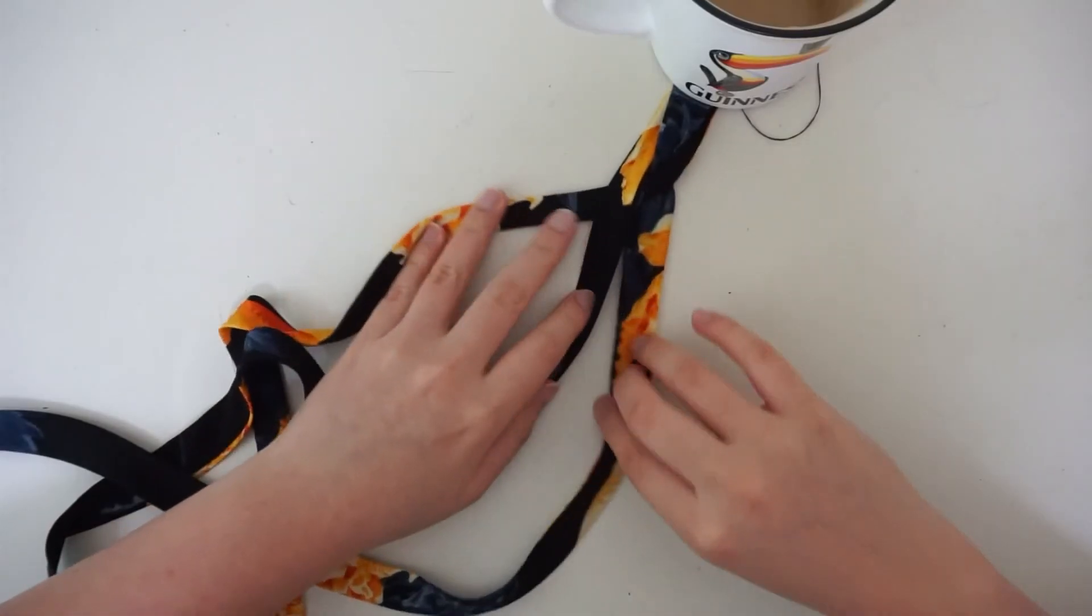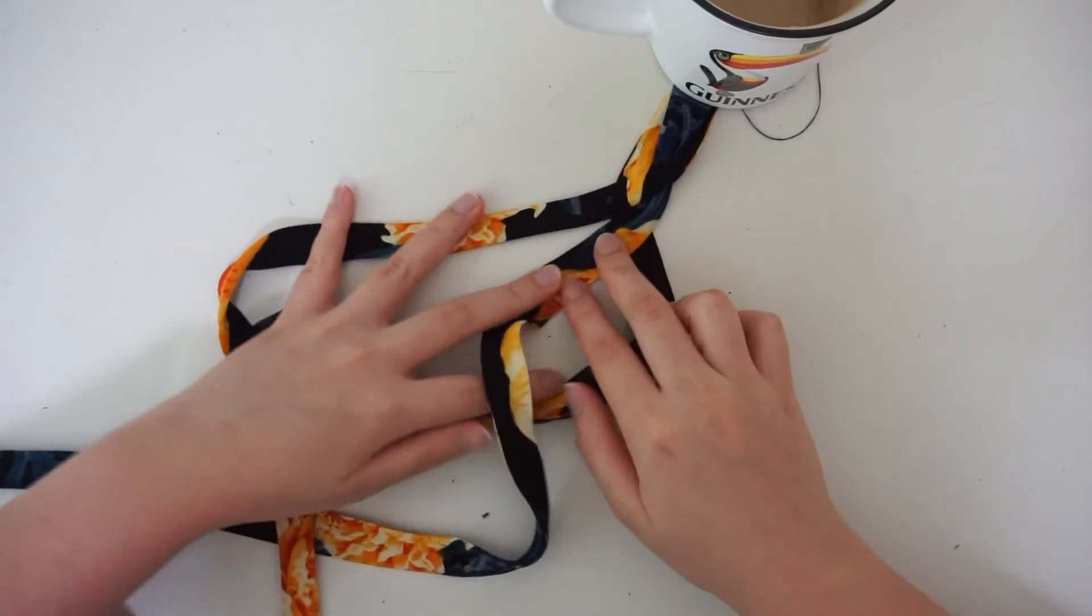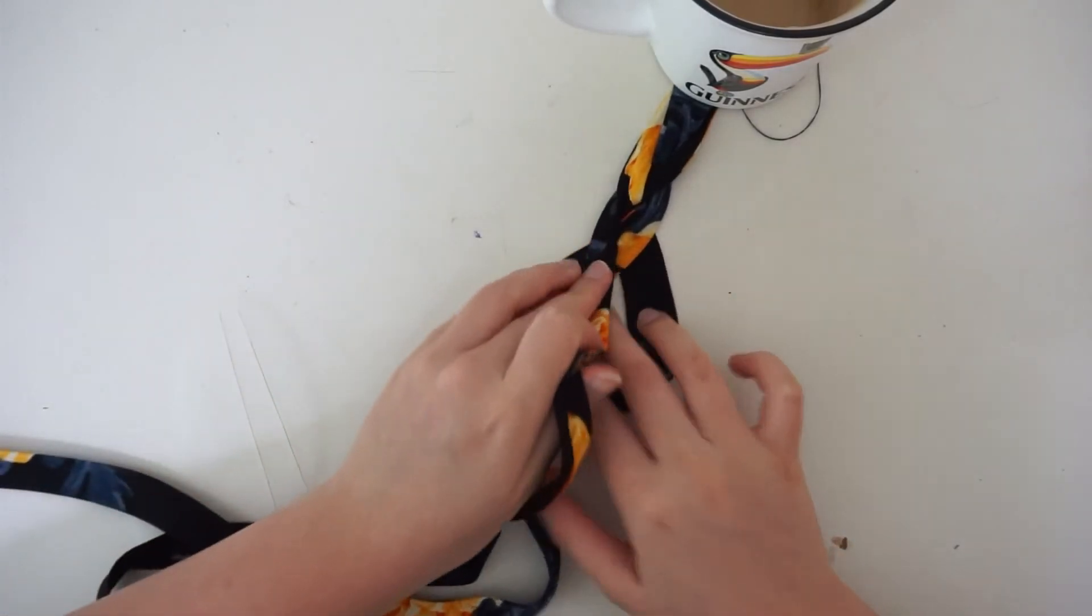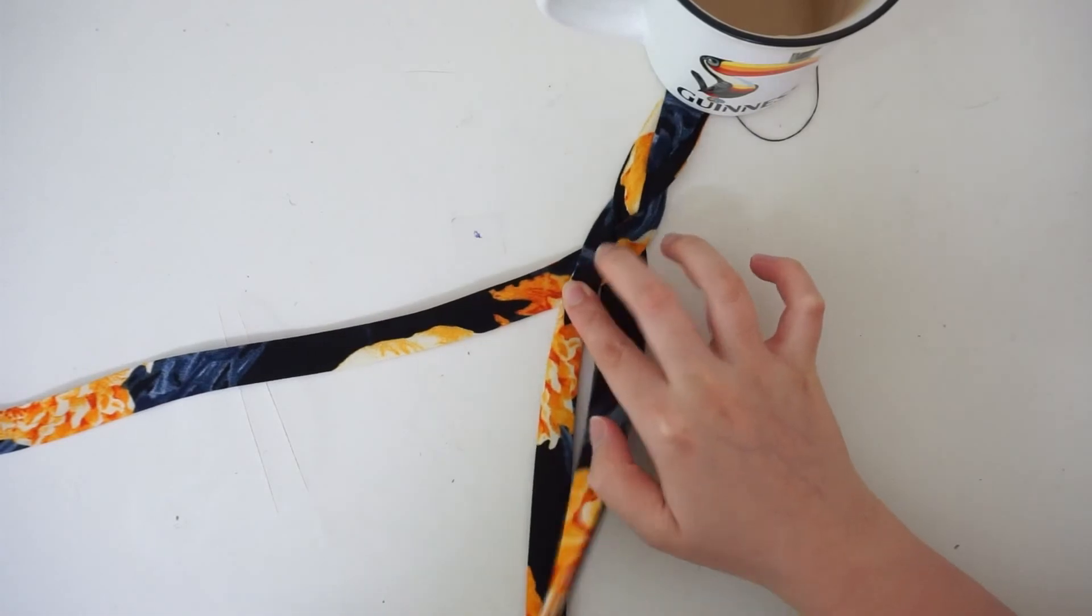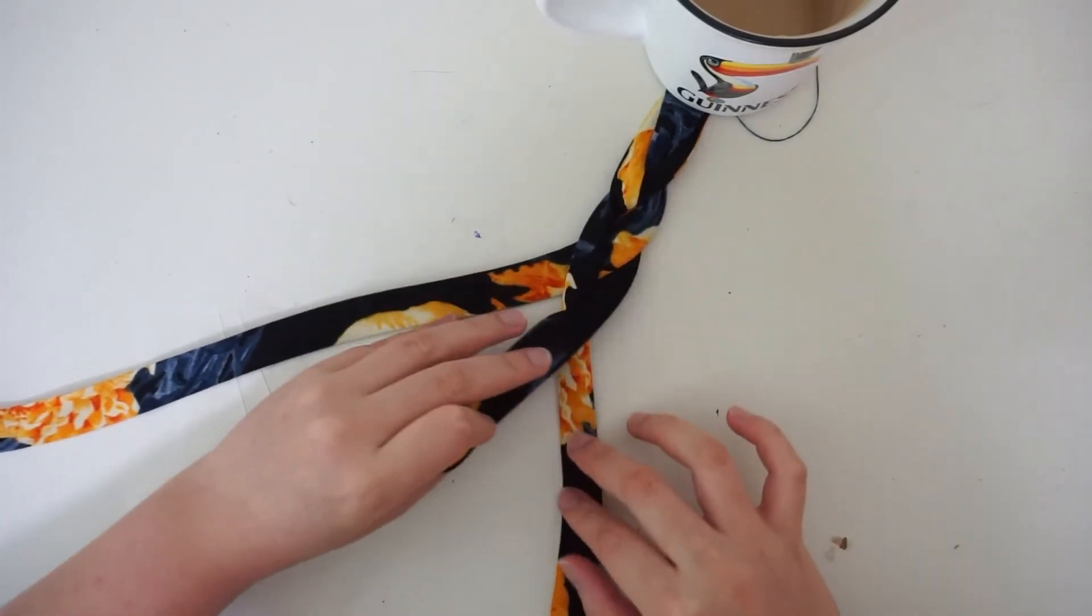To make the hanging decoration on the back, I simply take 3 strips of fabric, sew them, flip them inside out, iron them and braid them into a French braid. Then I attach the French braid to the back shoulder straps with hand stitches.